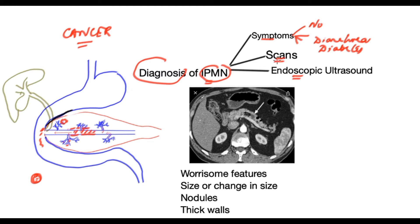The commonest modality by which this condition is diagnosed is through a scan, usually done for another reason. CT scan and MRI scan will both pick up this condition with a high level of accuracy. Here you can see the pancreas in the middle of the picture, with two cysts which are probably side branch IPMN. There is also a dilated main duct of the pancreas, making this a mixed variety of the disease in the same pancreas.